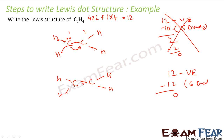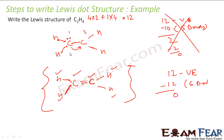Now let's see if everybody is happy. This carbon has 8 electrons — this carbon is happy. This carbon atom also has 8 electrons — this carbon is also happy. Each hydrogen has 2 electrons and is happy. Everybody is happy.